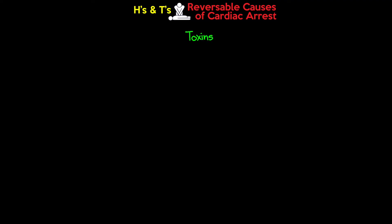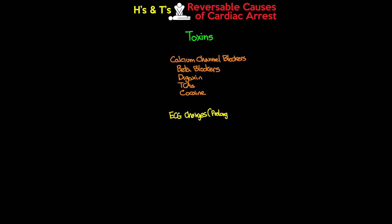That finishes the H's — now the T's. The first T is toxins. The most common toxins leading to cardiac arrest include calcium channel blockers, beta blockers, digoxin, TCAs, and cocaine. Assessment involves looking for EKG changes such as QT prolongation, examining the pupils, and reviewing the patient's history. Treatment involves supportive care and administering any available antidote.